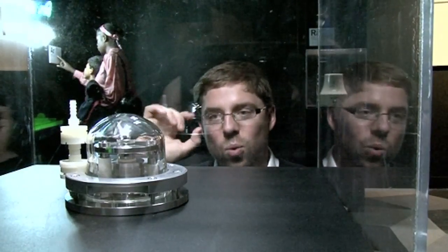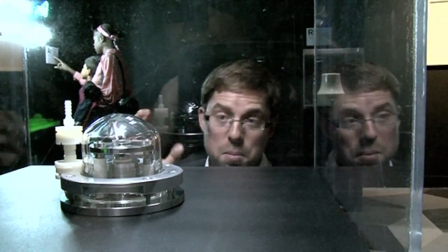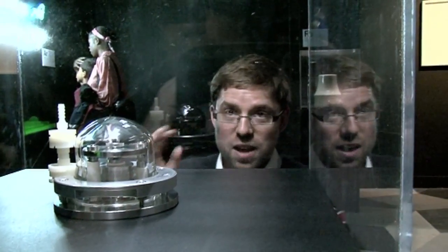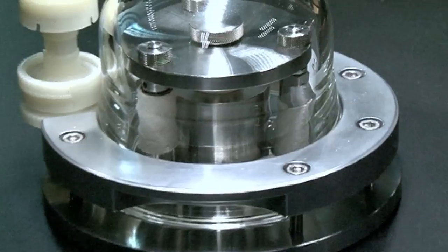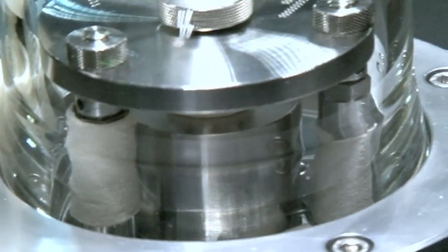So inside that vacuum bell is a little cylinder which is exactly one kilogram of platinum so it's probably, in terms of material, it's probably the most valuable thing we have in the gallery, probably in the region of 40,000 pounds plus. But just that little piece there is so precise.